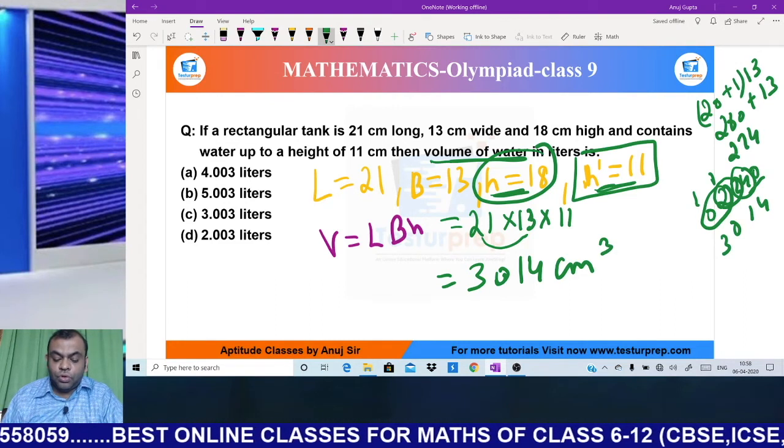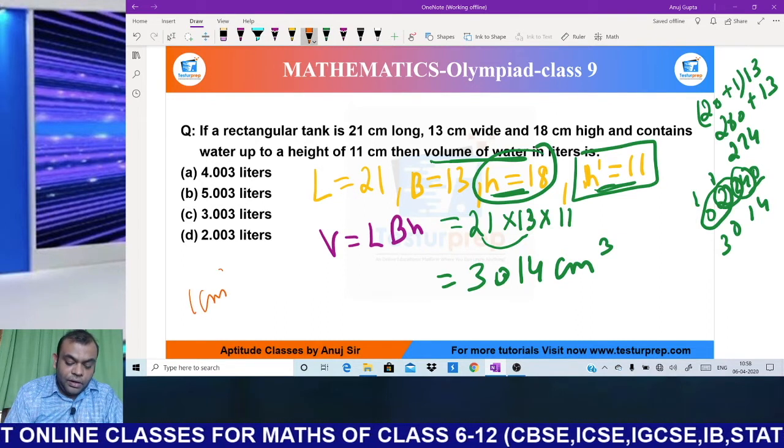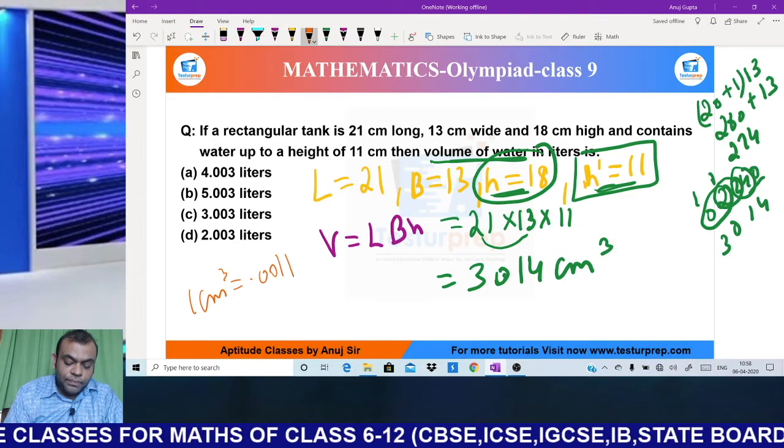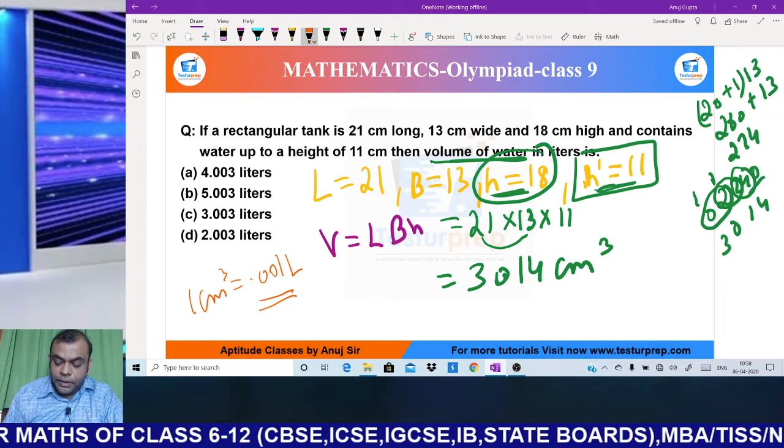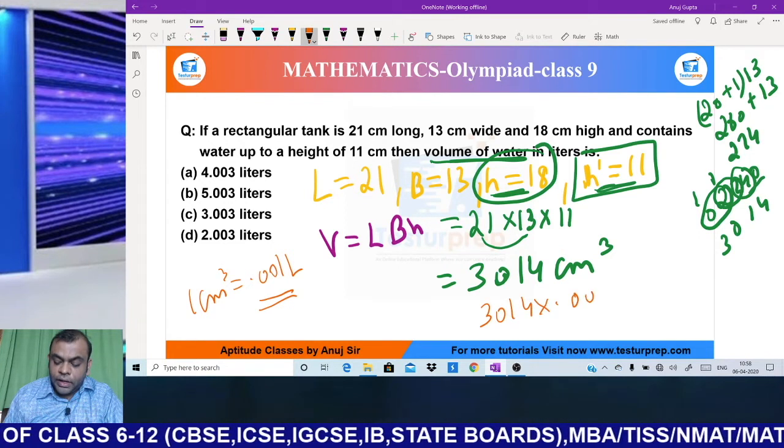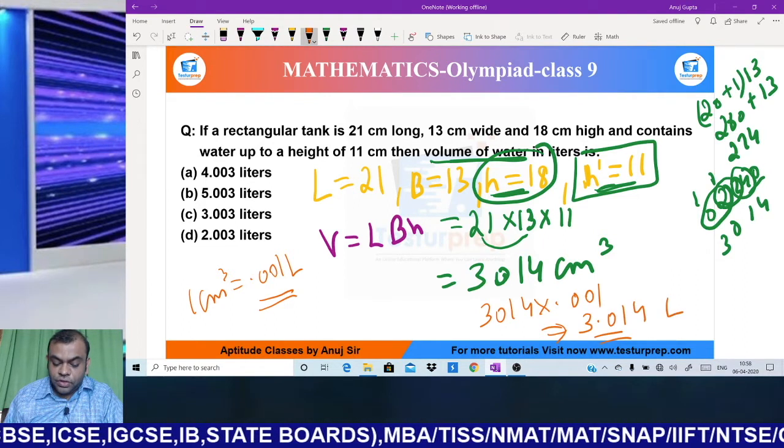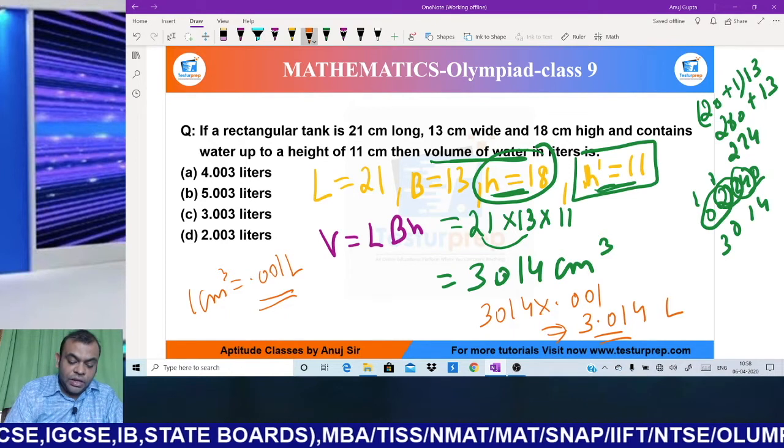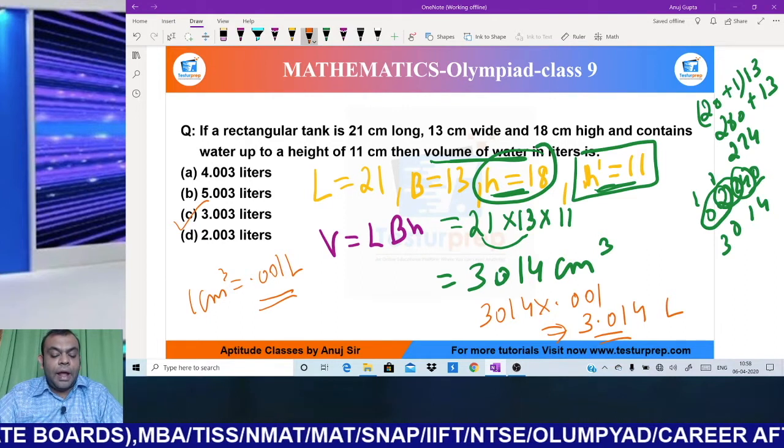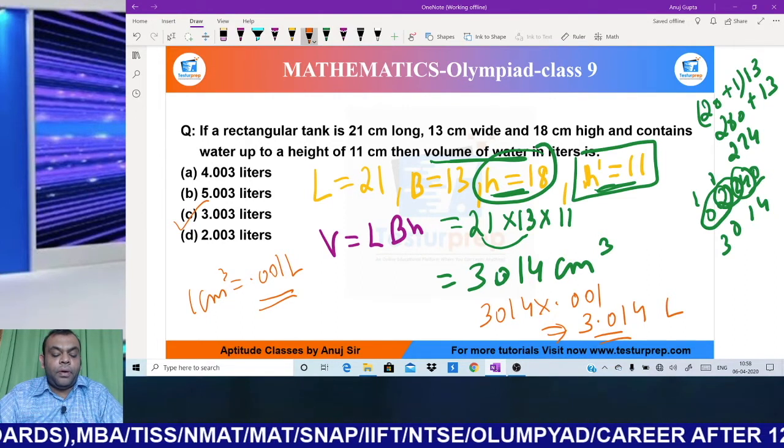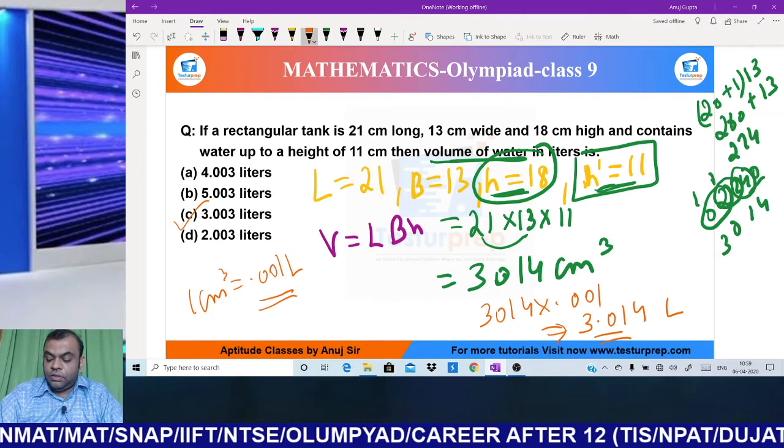But the answer needs to be in liters. Remember, 1 cm³ = 0.001 liters. So multiply 3,014 by 0.001, hence my answer becomes 3.014 liters. The nearest available option is option C, 3.003 liters. I hope this question is clear. After solving this, let's move ahead.